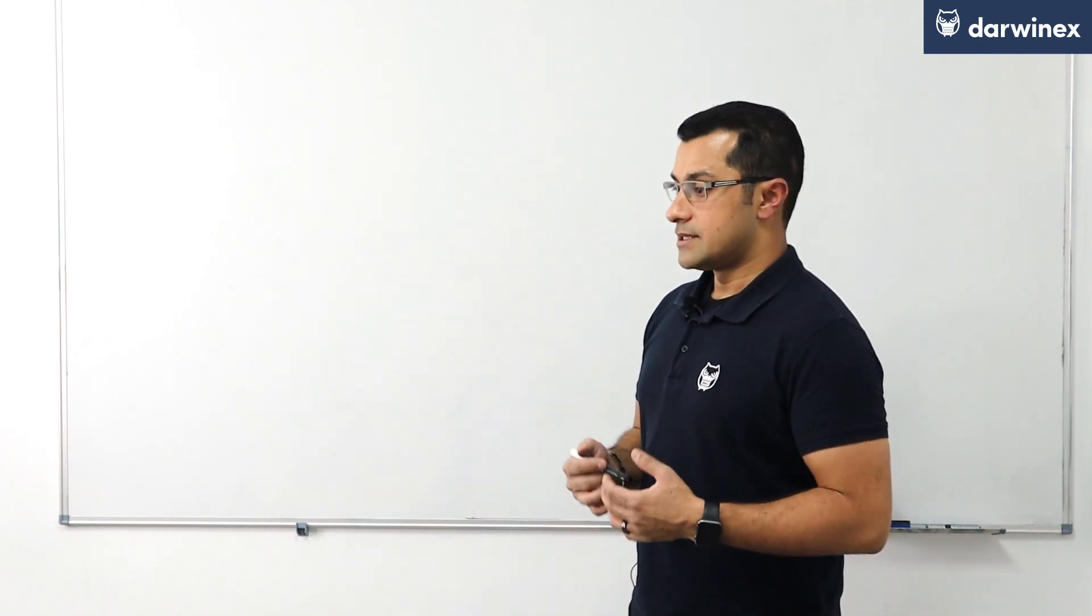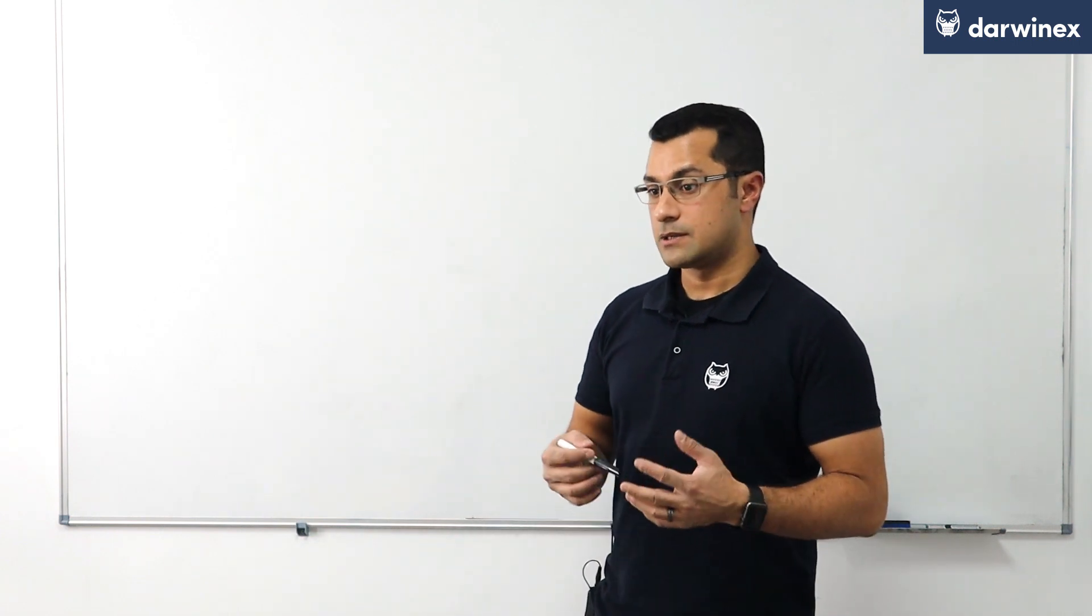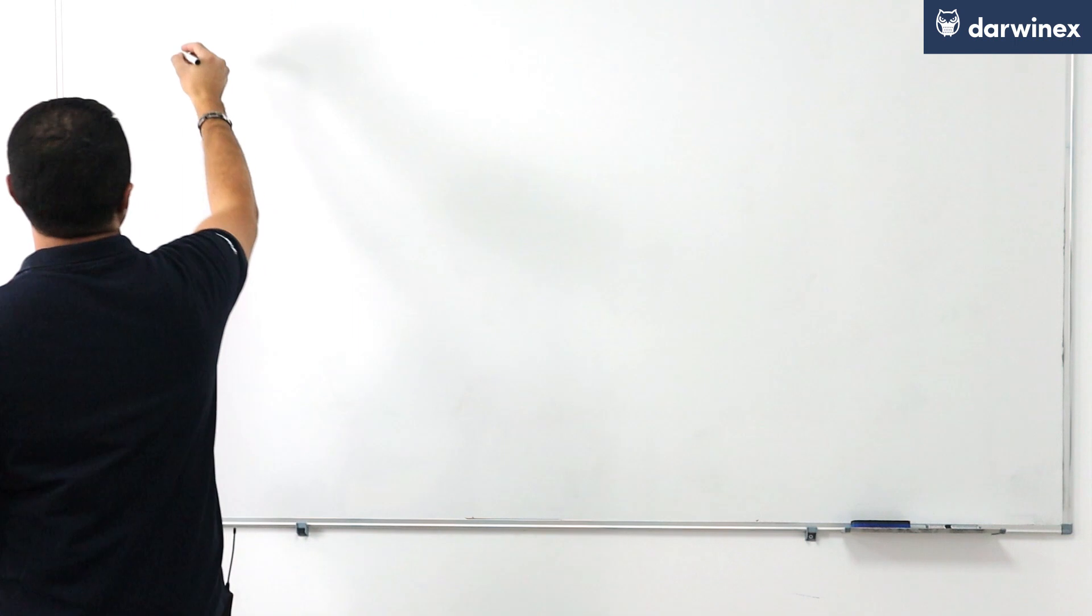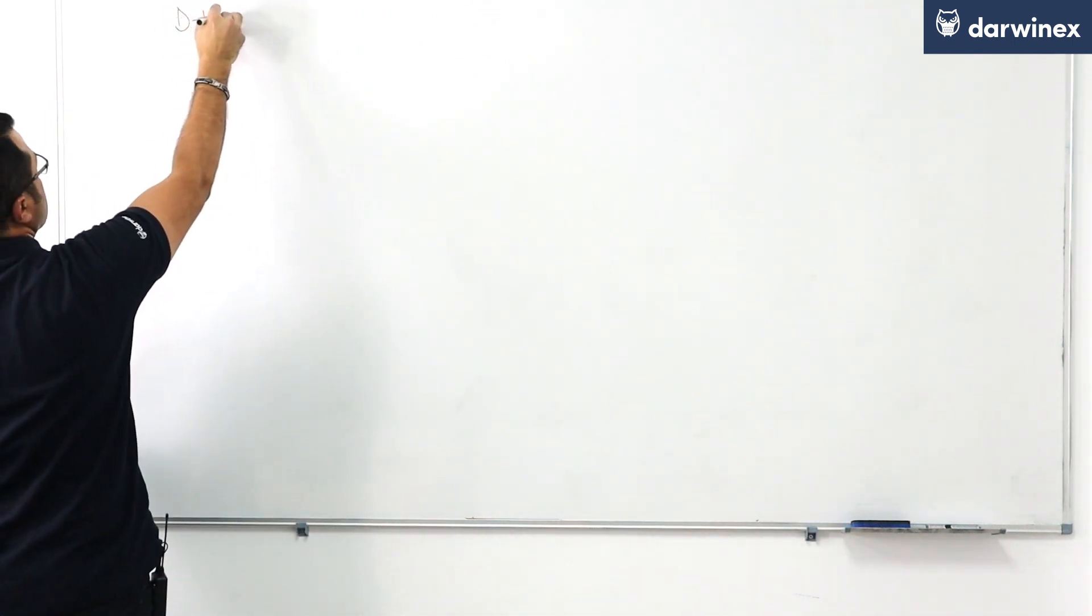That metric at DarwinX that we'll be defining now and moving forwards with will help us in better approximating the true value at risk of a trading strategy. The metric is called deleverage.